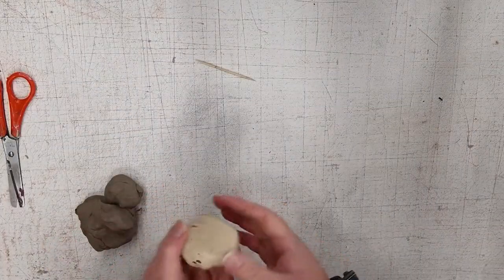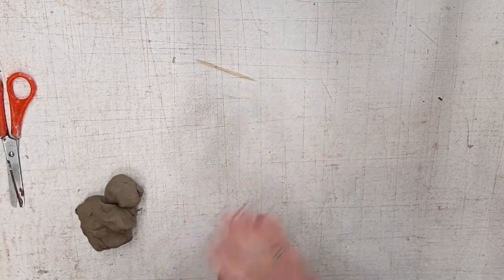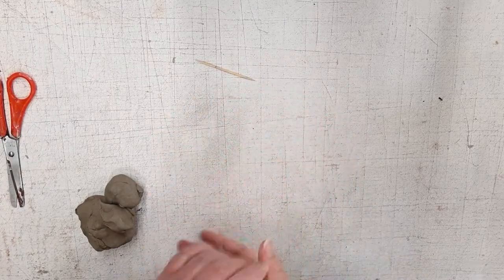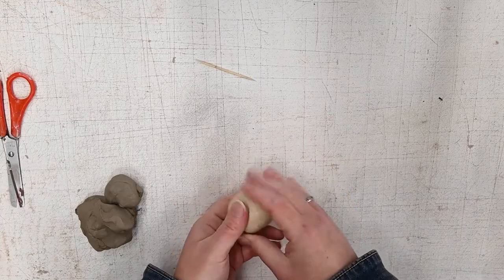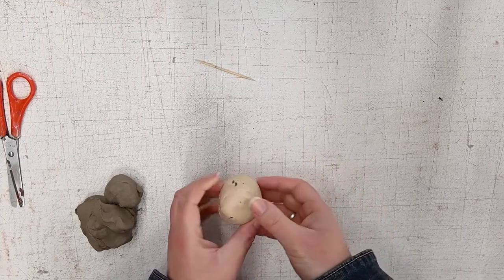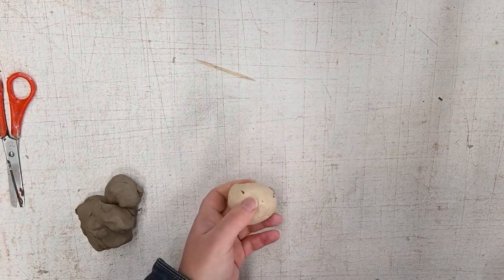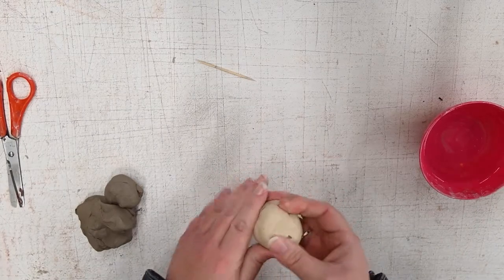Once you finish your planning sketch, you're going to take a palm-sized amount of clay and roll it into a ball. We want to get it as even and as smooth as possible. As your hands work the clay, your hands will take moisture away from it. So if you notice that it's starting to crack or it's becoming difficult to work with, you can just take a little bit of water on your finger and add it to the clay.